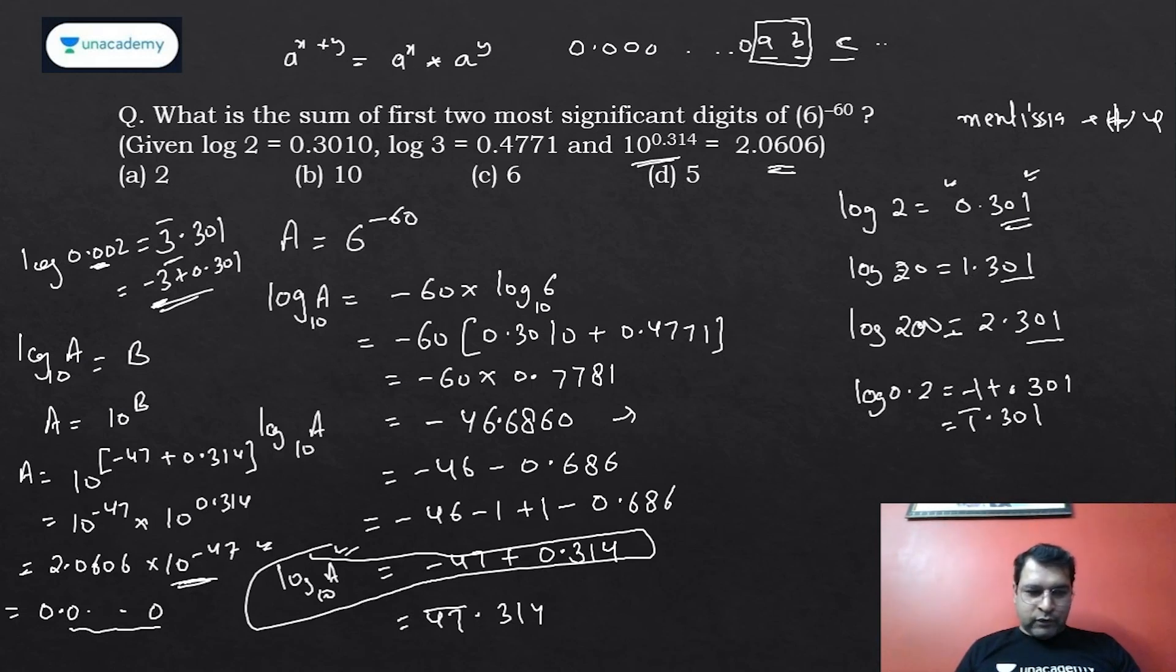So what are the two most significant digits? I need to find the sum of these. The answer is 2 + 0 = 2. I hope the logic is clear.